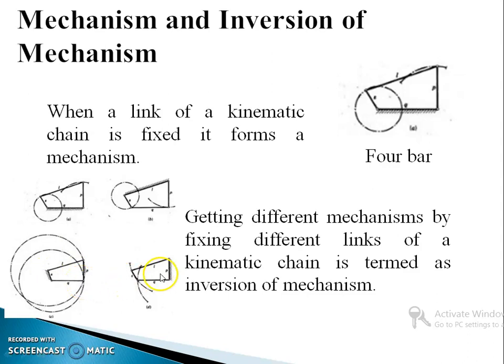Now, here, I have fixed the link which is opposite to the shortest link. And in this case, the link three and the link four will be having an oscillatory motion. And this is named as double rocker mechanism. So, getting different mechanisms by fixing different links of a kinematic chain is termed as inversion of mechanism.